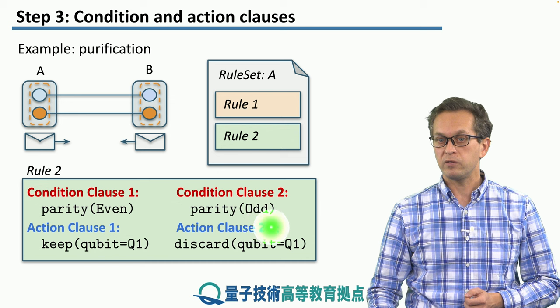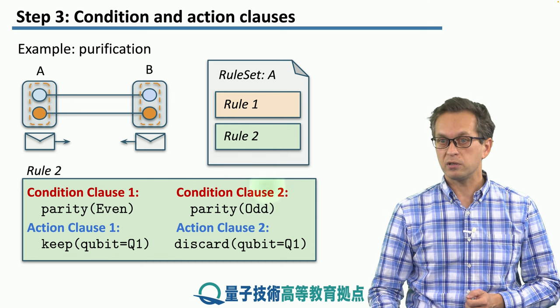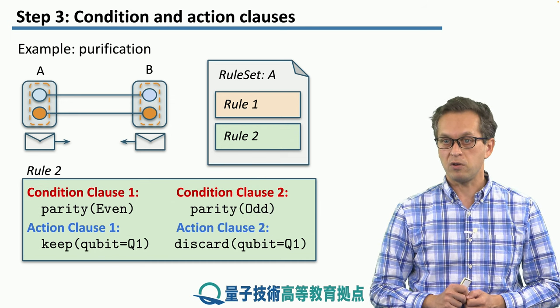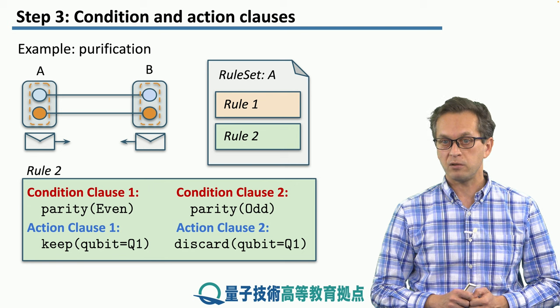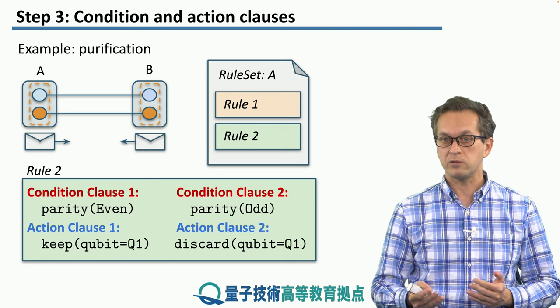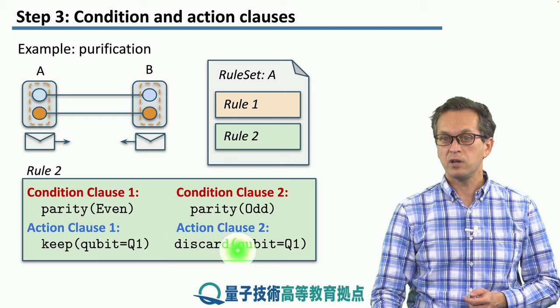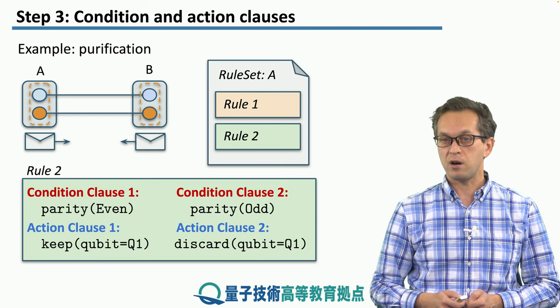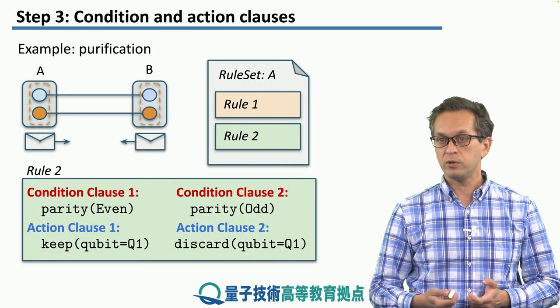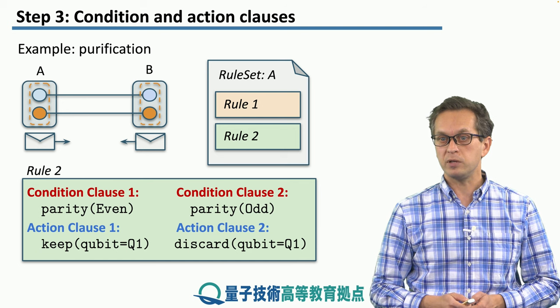Similarly, if condition clause 2 is triggered, this is when the parity is odd. So the classical measurement outcomes are 01 or 10. Then action clause 2 is triggered, which instructs the node to discard qubit 1. If we wanted, we could easily rewrite this for node B as well.